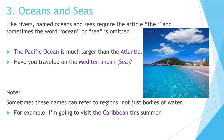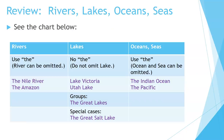Number 3: Oceans and Seas. Like rivers, named oceans and seas require the article THE, and sometimes the word OCEAN or SEA is omitted. The Pacific Ocean is much larger than the Atlantic. Have you ever traveled on the Mediterranean Sea? Note: sometimes these names can refer to regions, not just bodies of water. For example, I'm going to visit the Caribbean this summer. Review: Rivers, Lakes, Oceans and Seas — see the chart below.